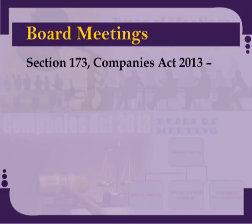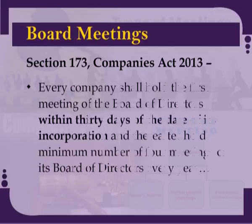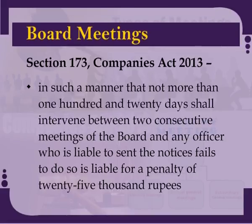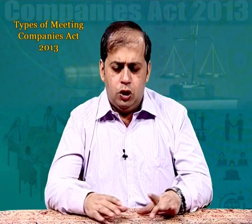As per section 173 of the Companies Act of 2013, every company shall hold the first meeting of the board of directors within 30 days of the date of its incorporation and thereafter hold a minimum number of 4 meetings of the board of directors every year in such a manner that not more than 120 days shall intervene between two consecutive meetings of the board. Any officer who is liable to send the notices and fails to do so is liable for a penalty of rupees 25,000. A one person company, small company and a dormant company shall be deemed to have complied with these provisions if at least one meeting of the board of directors has been conducted in each half of the calendar year, and the gap between the two meetings is not less than 90 days.